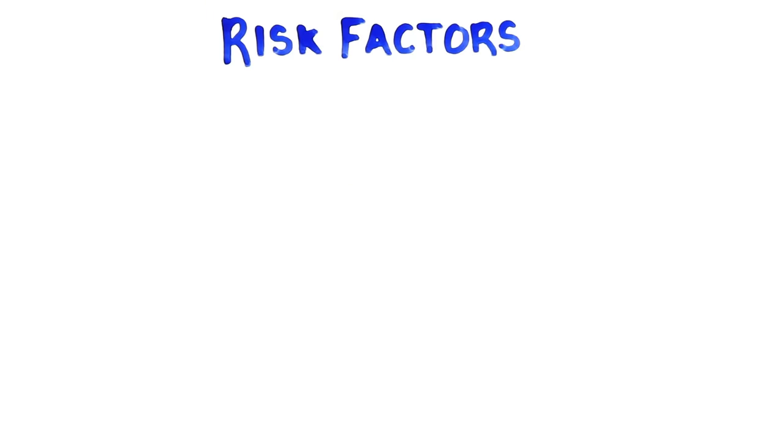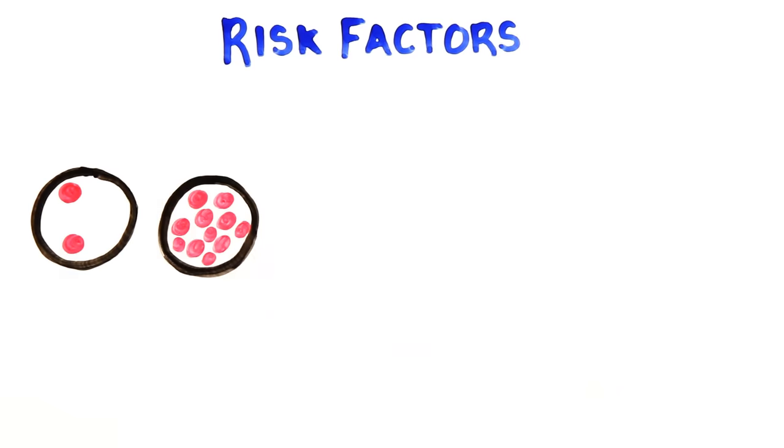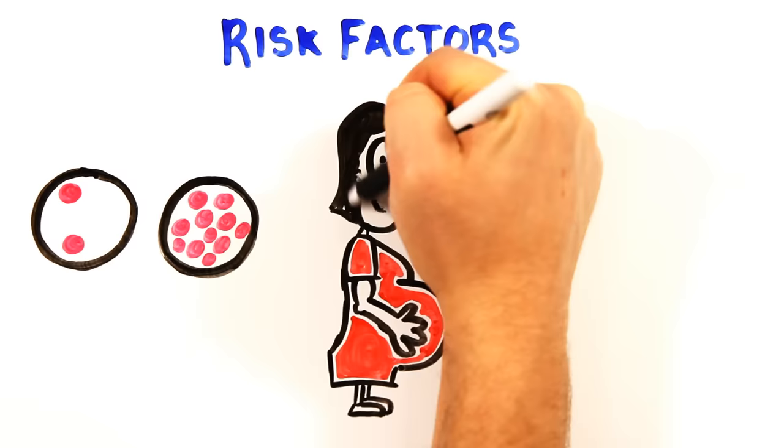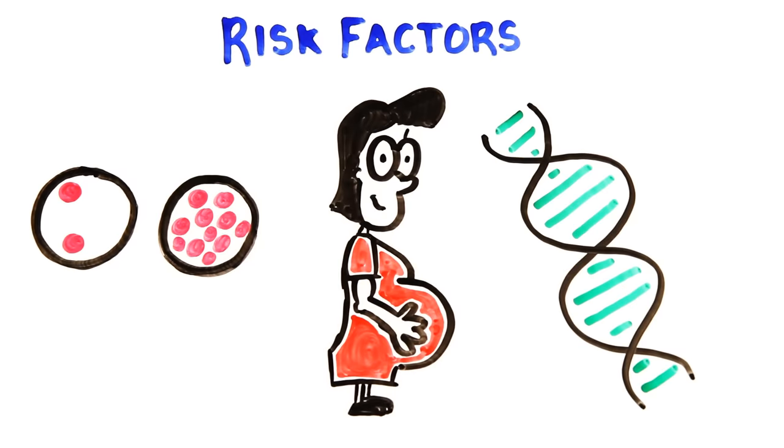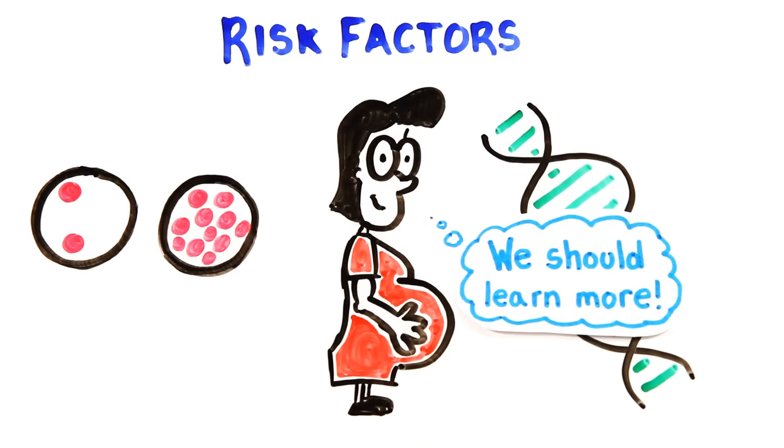Research is discovering new risk factors of breast cancer, such as breast density, age of first pregnancy, and genetic predisposition to breast cancer genes, such as BRCA1 and BRCA2. This scientific knowledge can help increase prevention.